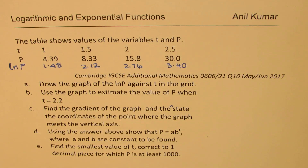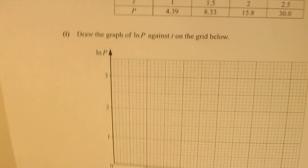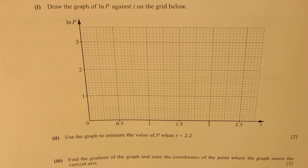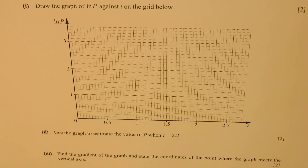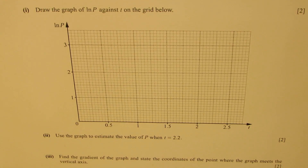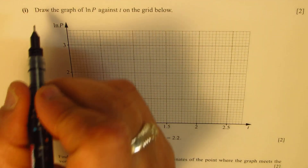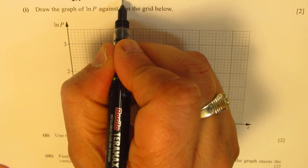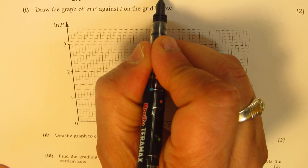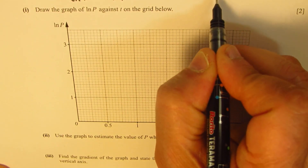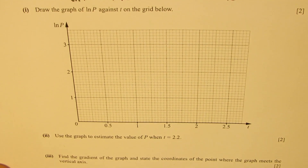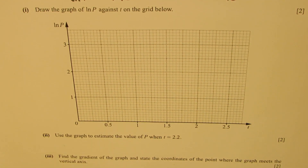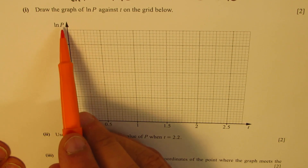I'll pull up the graph that came with the question and plot the points. So here is the graph paper. Let me copy all the values we figured out: ln(P) is 1.48, 2.12, 2.76, and 3.40. We have T on the horizontal axis and ln(P) on the vertical axis.